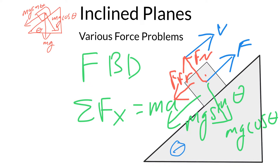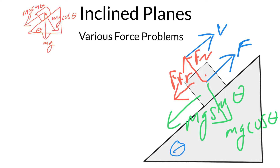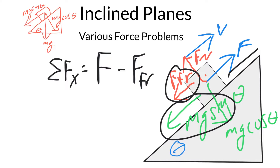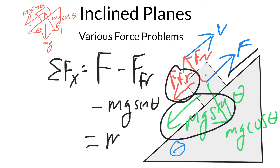Let's set up the summation. We add up all the forces along the ramp direction. We have our applied force F, then we subtract friction since it opposes the upward motion, and then we subtract the component of gravity along the ramp: minus mg sine theta. All three of these terms equal mass times acceleration: F - friction - mg sinθ = ma.